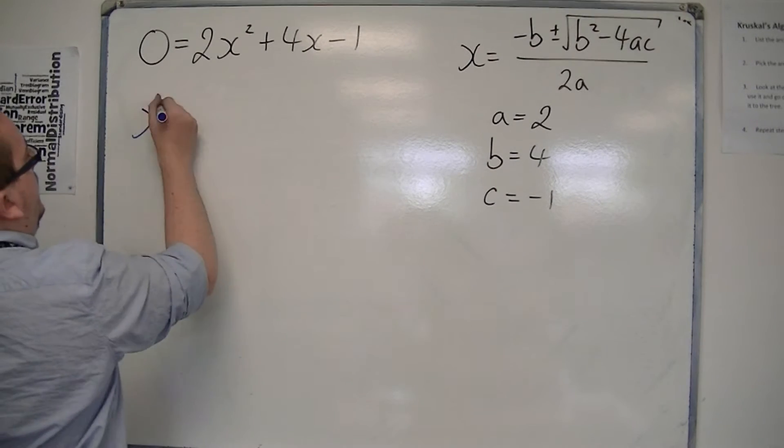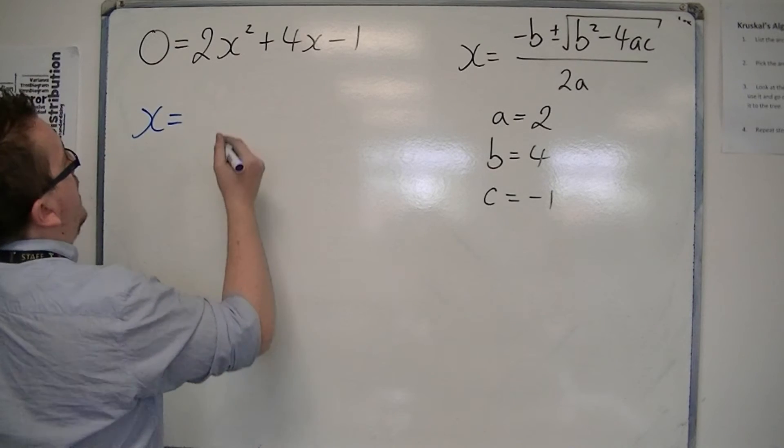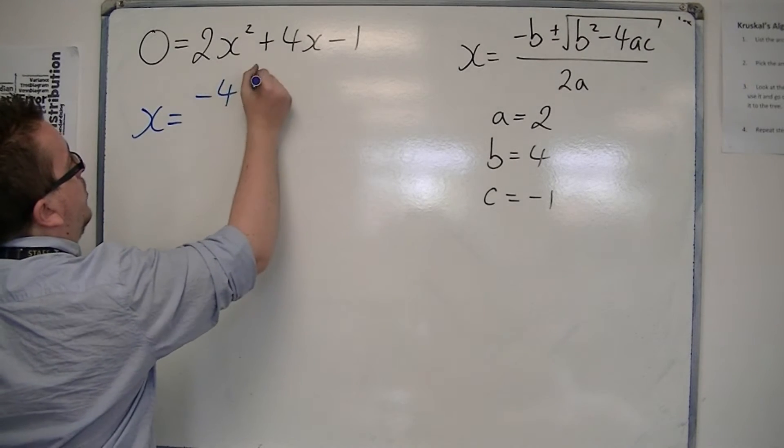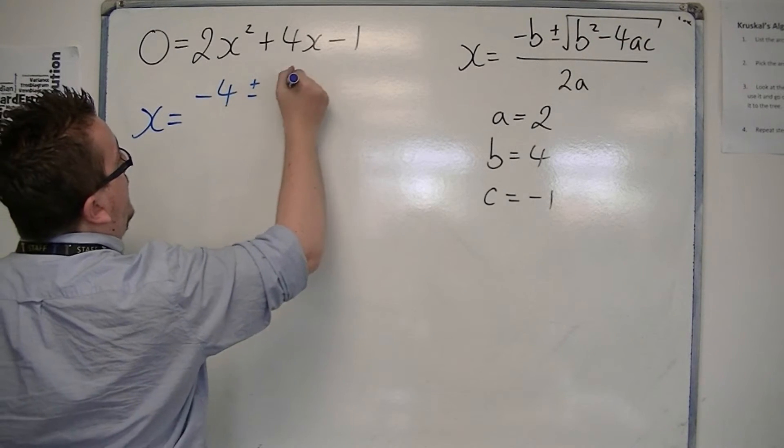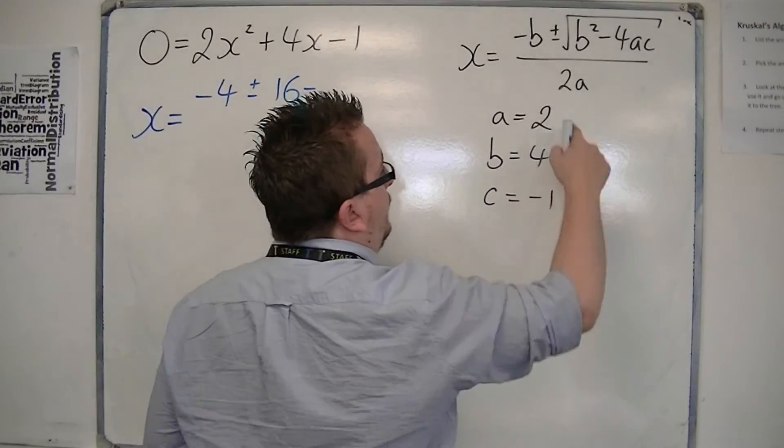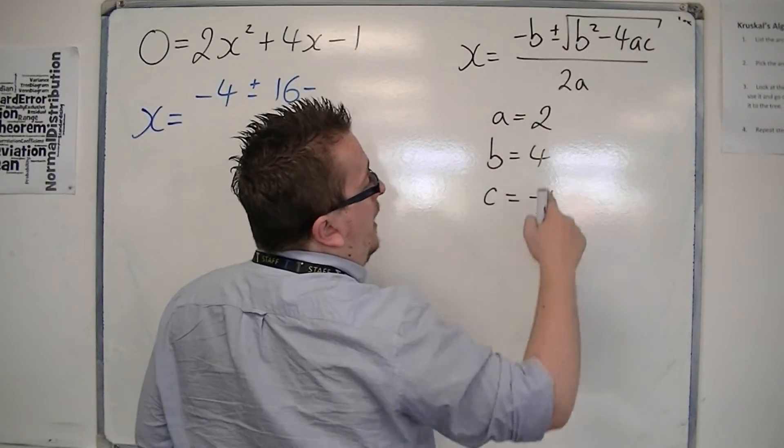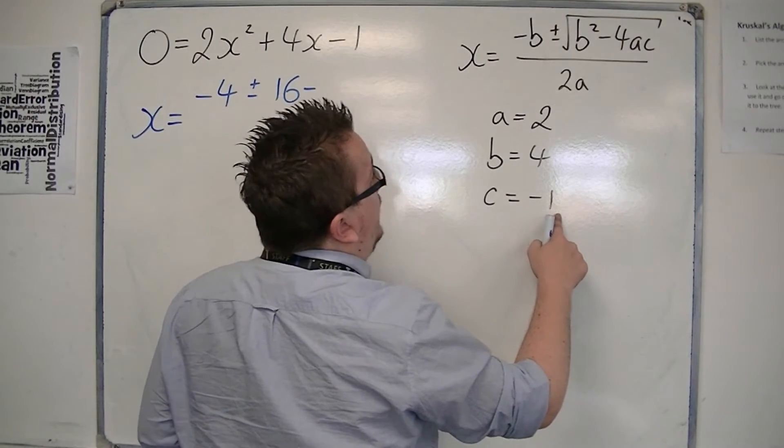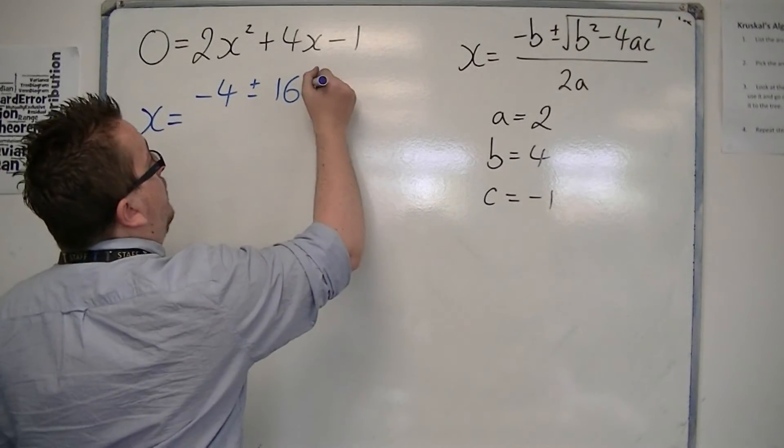So x is equal to minus b, so that's minus 4, plus or minus b squared is 16, take away 4 lots of a times c. So 4 lots of 2 is 8, 8 lots of minus 1 is minus 8, so take away minus 8 is plus 8,